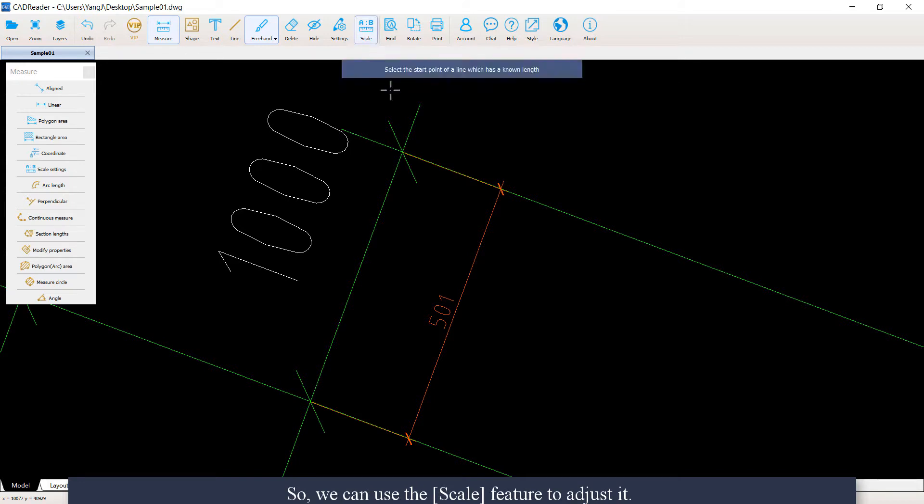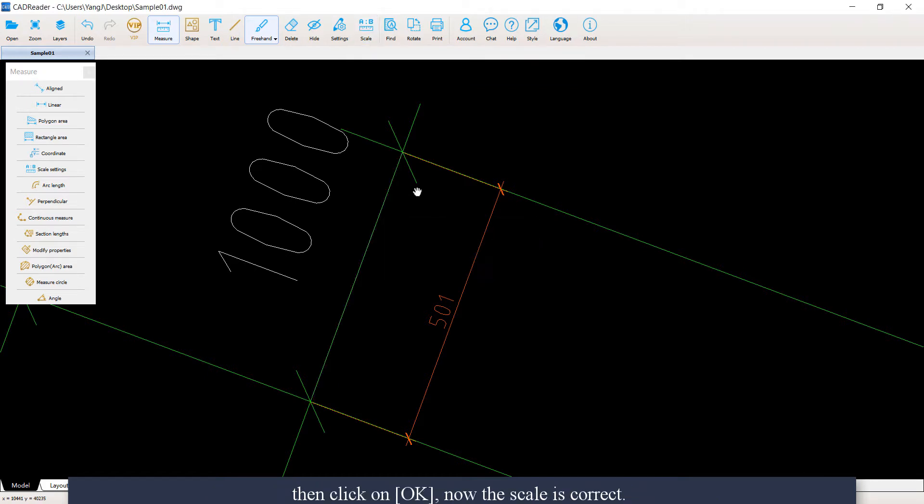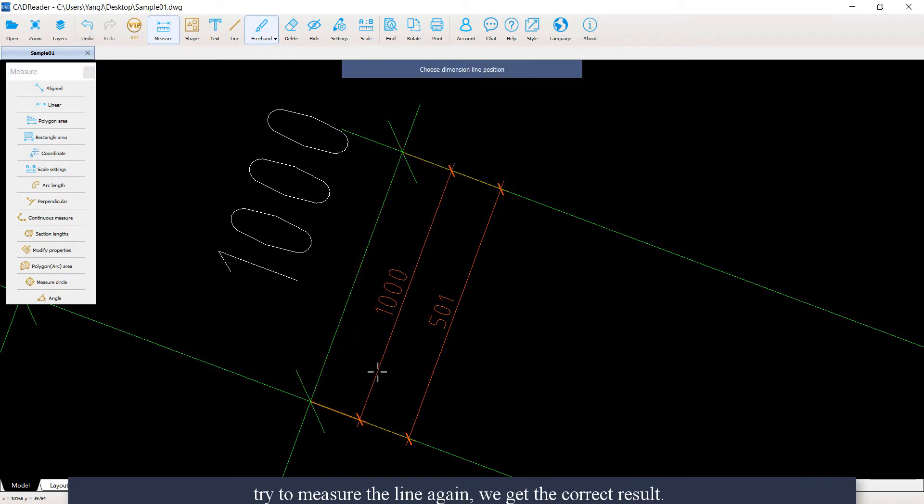We can use the scale feature to adjust it. We choose a line that has a known length, then input the actual length, then click OK. Now the scale is correct. Try to measure the line again. We get the correct result: 1000 mm.